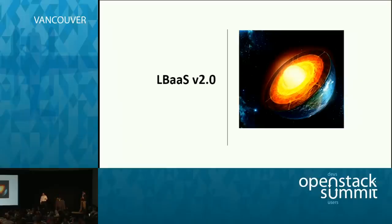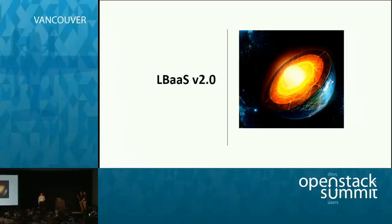About two years ago, when V1 was done, we started to hear requests for adding additional capabilities. The key use cases not addressed in V1 were: we actually want to put more than a single TCP port behind an IP — which seems reasonable but wasn't there in V1 — and the other was we actually want to do TLS termination, because there's a lot of smartness in looking at content and doing load balancing, and you can't really do that if you don't do termination.